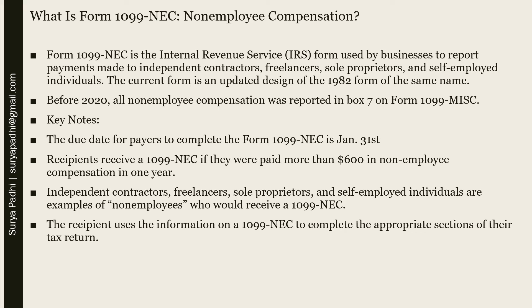Key notes: the due date for payers to complete Form 1099-NEC is January 31st. Recipients receive a 1099-NEC if they were paid more than $600 in non-employee compensation in one year. Independent contractors, freelancers, sole proprietors, and self-employed individuals are examples of non-employees who would receive a 1099-NEC. The recipient uses the information on a 1099-NEC to complete the appropriate sections of their tax return.